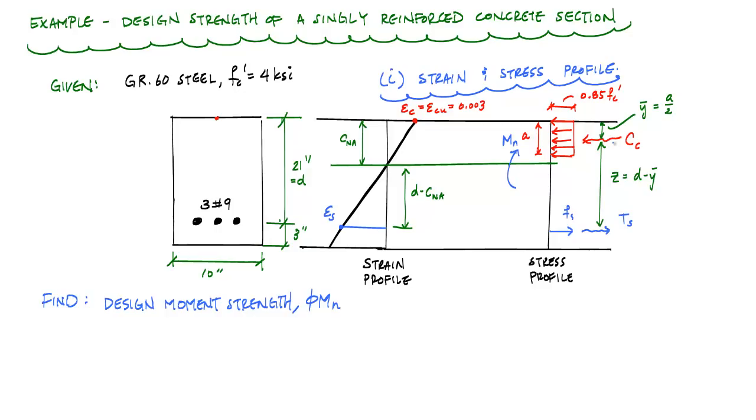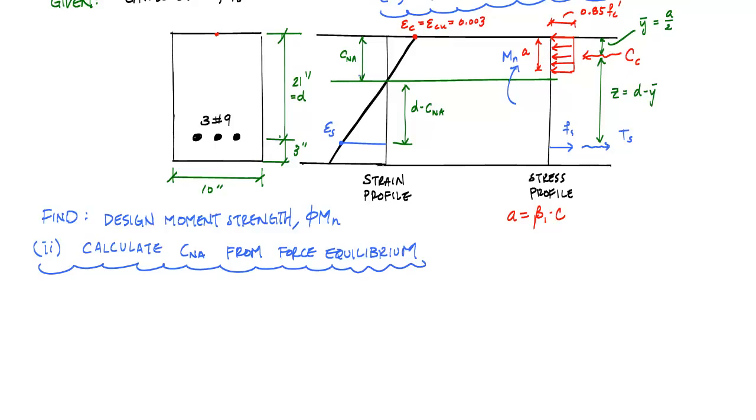If you can draw the strain and stress profile, then you're not going to have to ever memorize any equations. With that equivalent stress block, this A is equal to beta 1 times C, and beta 1 depends on the concrete compressive strength. If you agree with the strain and stress profile that I've set up here, then the next few steps are pretty straightforward. The next thing that we want to do is determine the neutral axis location. The way to calculate the neutral axis location is from equilibrium or from force equilibrium of this section. If I apply sum of the forces in the horizontal equal to 0, then I would just get T sub S is equal to C sub C.